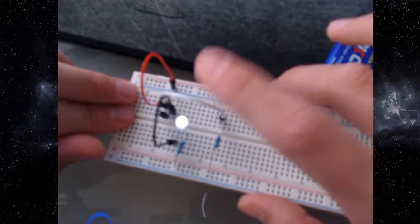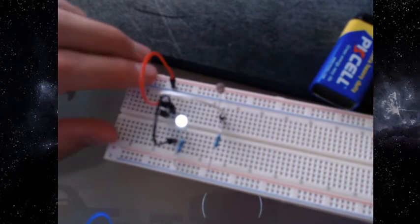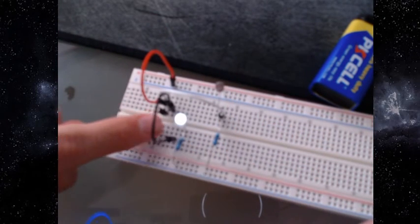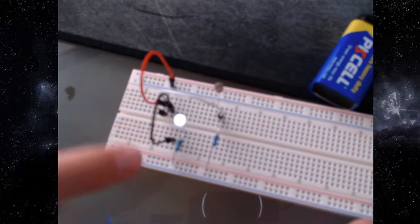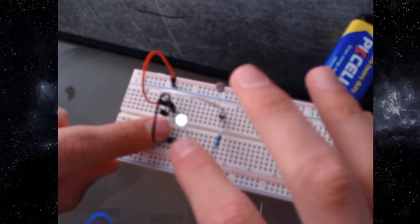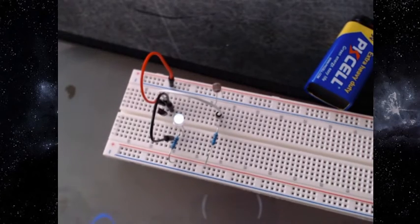So this one's got two negative—the red one is going to negative, the white one is going to neutral. Then the black one is going to positive to negative of the LED, and the positive of the LED going to the 330 ohm resistor. And that will be it.